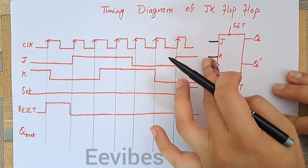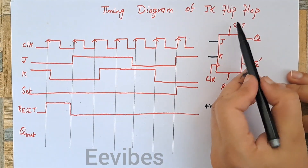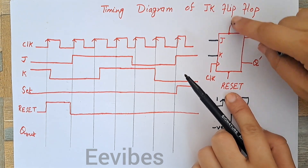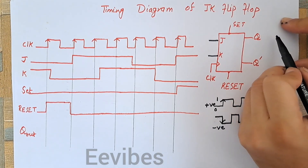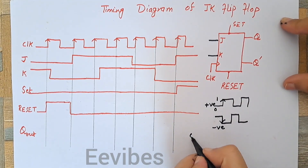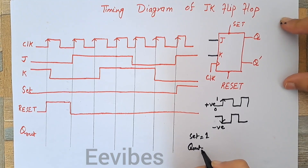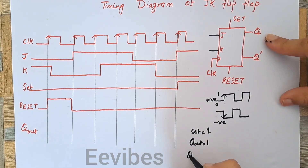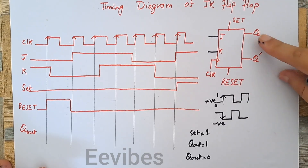J and K are the main inputs. Q is the output that we will be drawing. There are also two other terminals: the set input and the reset input. If we apply logic level 1 at the set input, the output of the flip-flop will be set to 1. If we apply logic level 1 at the reset input, it will force the output to go into the 0 state. The role of the set and reset inputs is to decide the initial state of the flip-flop.